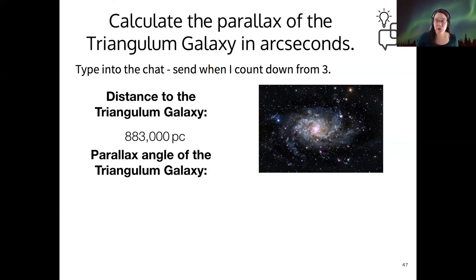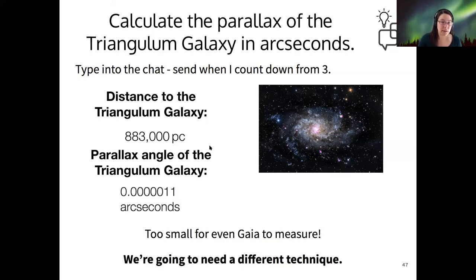Given the distance to the Triangulum Galaxy is 883,000 parsecs, what is the parallax angle that we would measure from here on Earth? Looks good. So if we take one divided by 883,000 parsecs, we get 0.000011. I guess if you wanted to be real precise, you could throw on a three on the end of there, arcseconds.